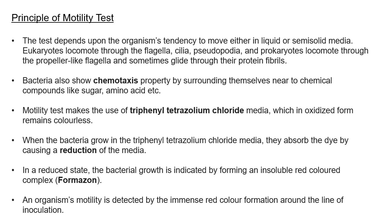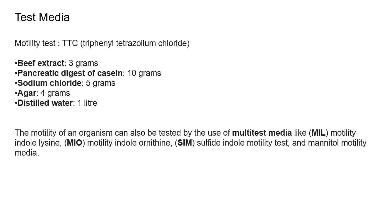An organism's motility is detected by the intense red color formation around the line of inoculation. When you inoculate, the inoculum along the line of inoculation will also grow and show a red color, but if growth is seen only in the line of inoculation and the bacteria has not moved away from it, that means it is non-motile.